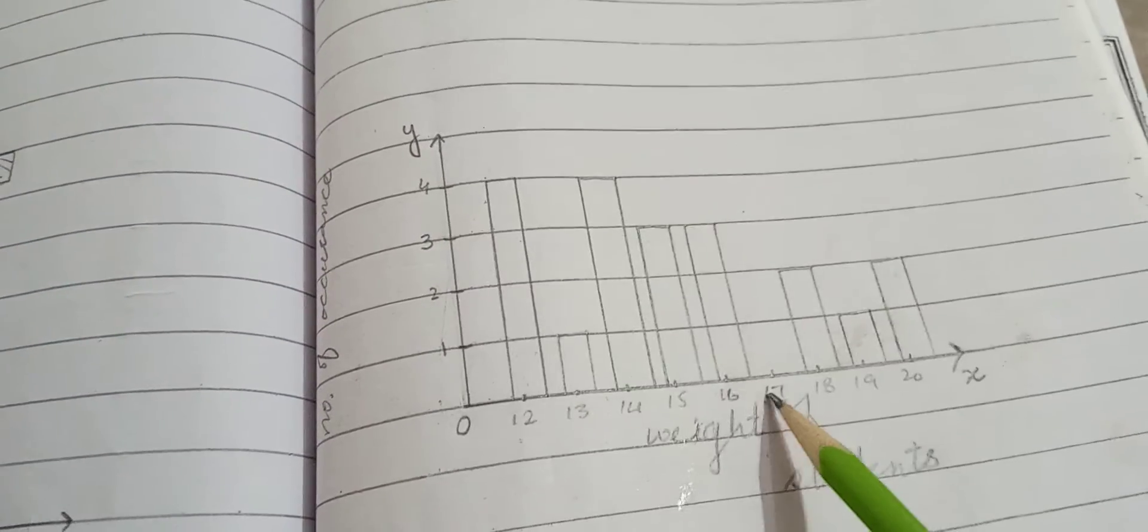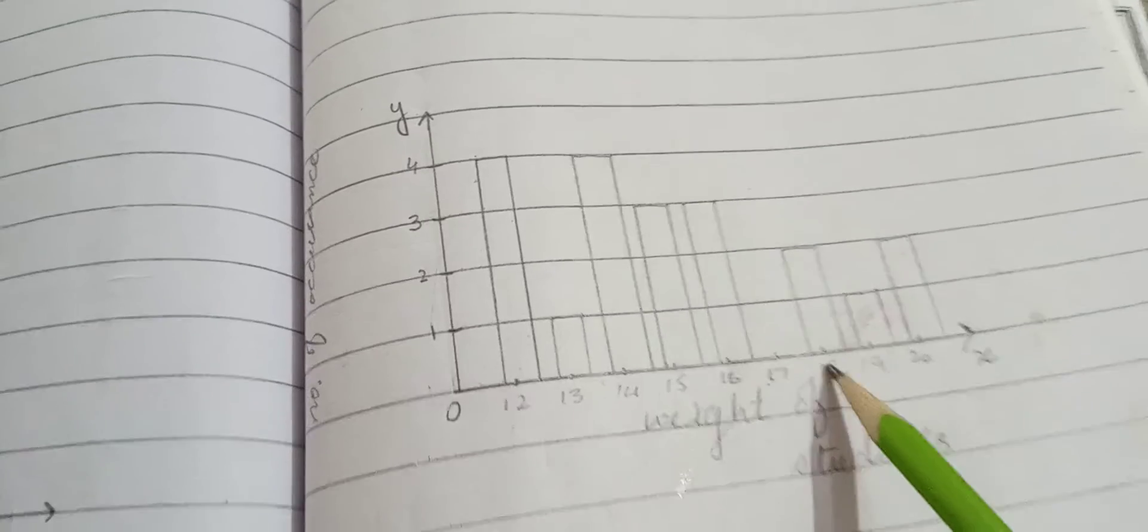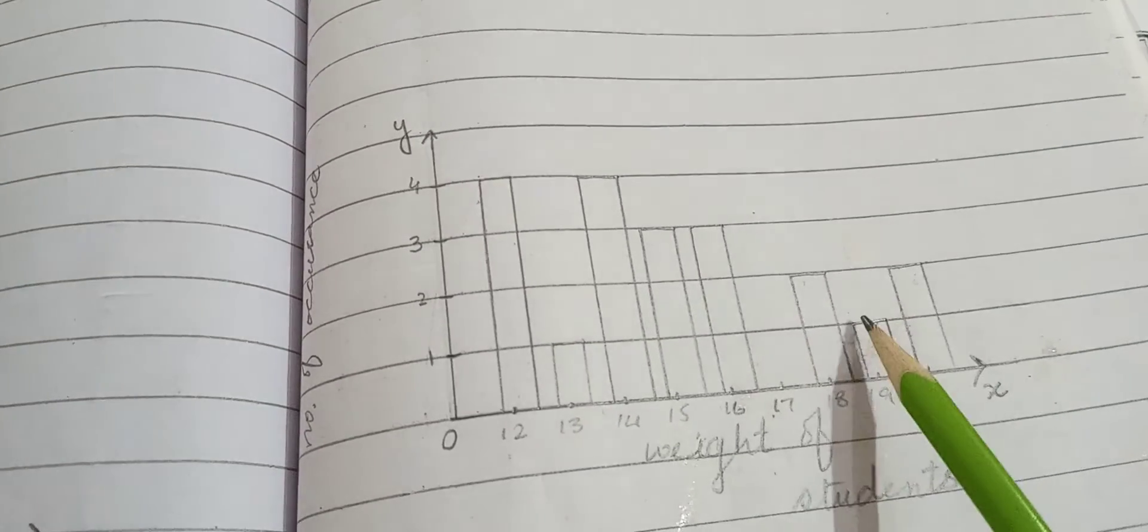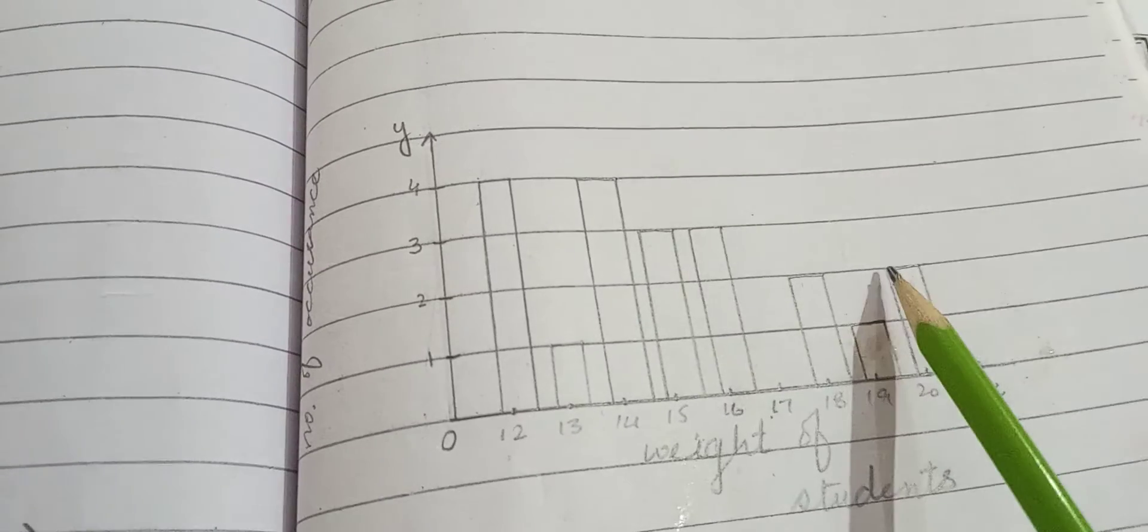This is blank. 18 kg weight was 2 students, 19 kg weight was 1 student, and 20 kg weight was 2 students.